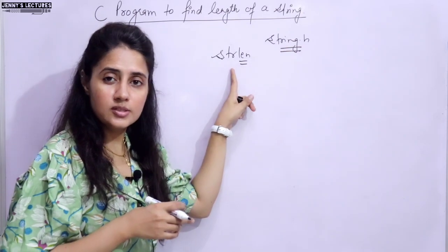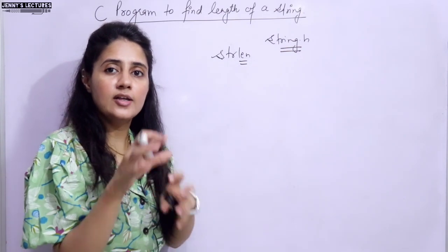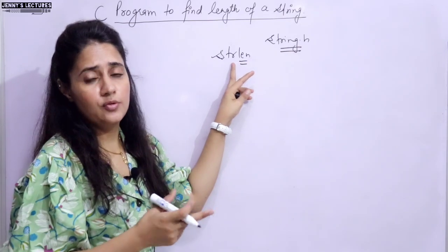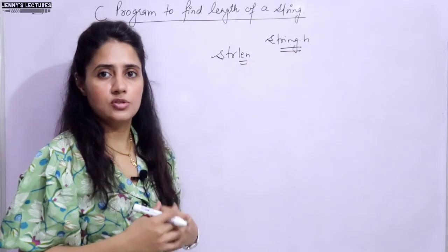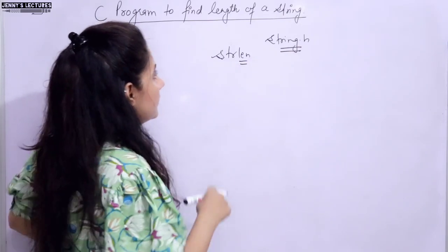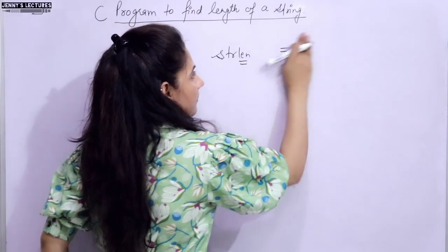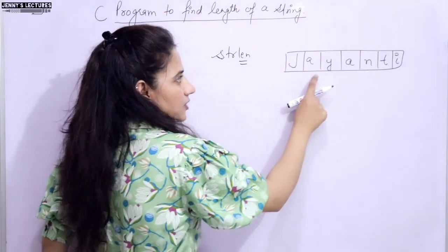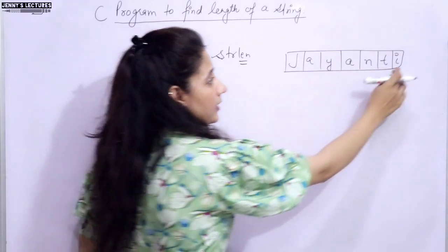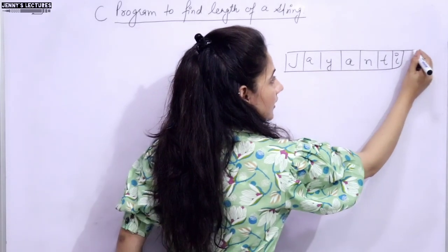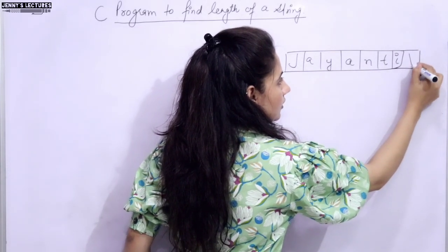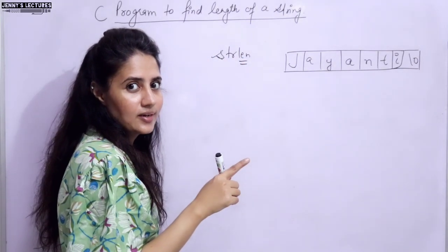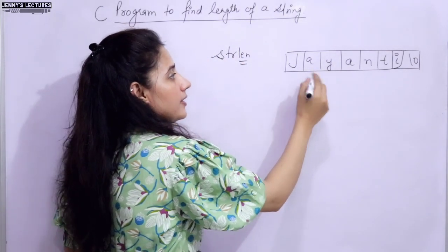We will use this predefined function, and also find the length of a string without using this predefined function - we will write our own logic. Suppose I am taking this string, and obviously at the end of the string we must have a null character.